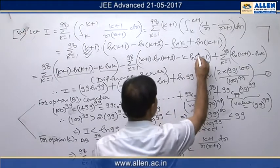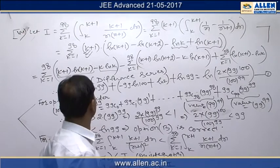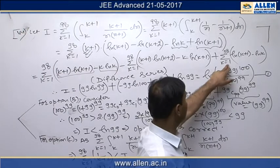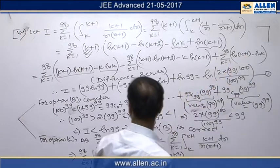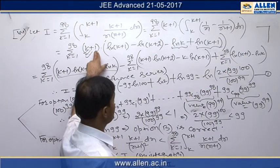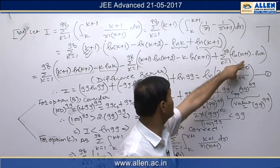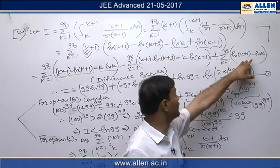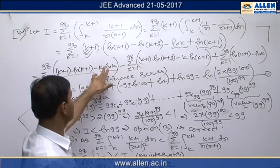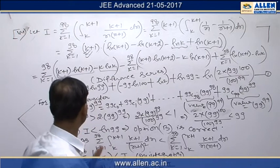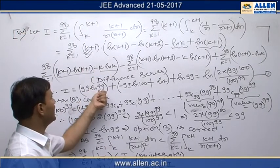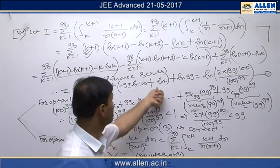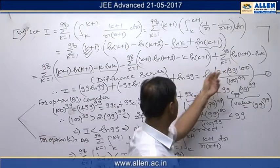We also multiply k with ln(k+1), giving yet another difference series. Finally, we write summation k from 1 to 98 of ln(k+1) — this is the term when we multiply 1 with ln(k+1) — minus ln(k), when we multiply 1 with ln(k). So the entire result is expressed as a collection of difference (telescoping) series.